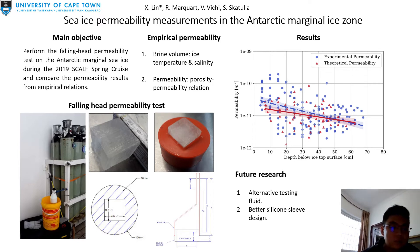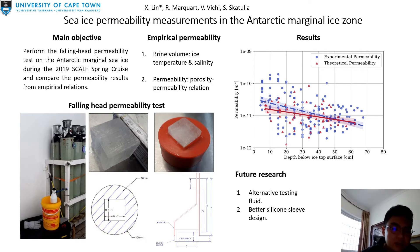The falling head prototype was made in-house to measure the sea ice permeability experimentally. It consists of an 8mm pipe, a 110-50mm pipe reducer, and a custom silicone sleeve.